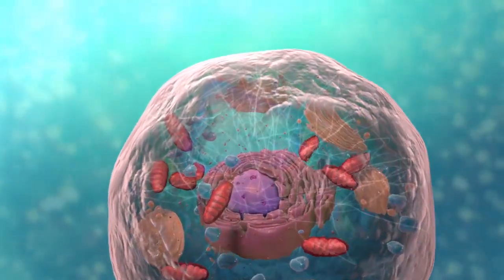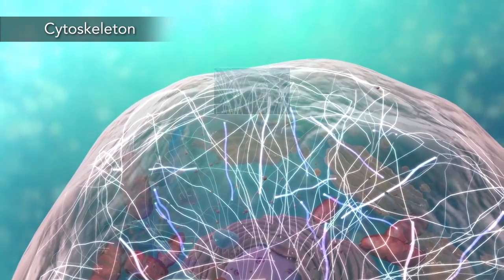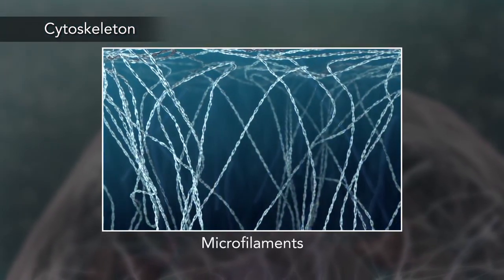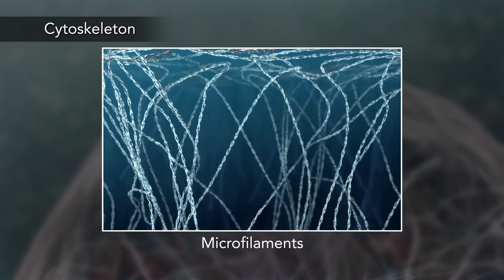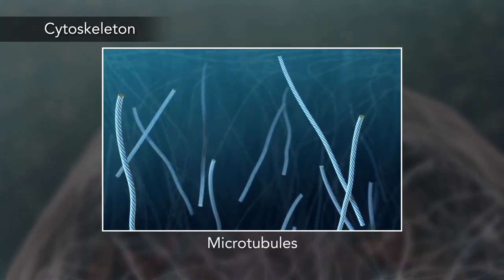Meanwhile, the cell maintains its shape through a cytoskeleton. The cytoskeleton includes the thread-like microfilaments, which are made of protein, and microtubules, which are thin, hollow tubes.